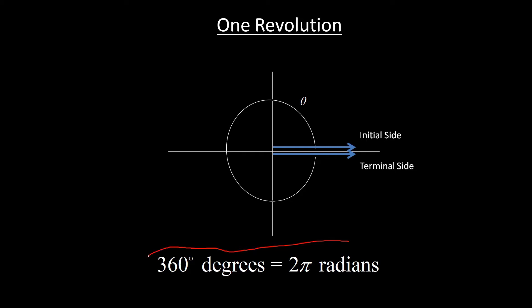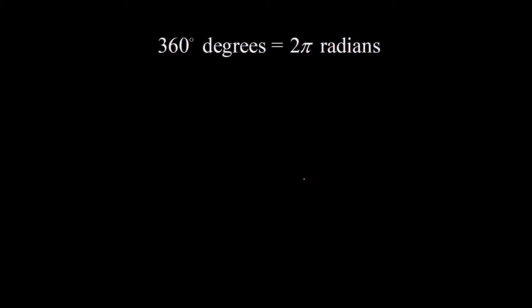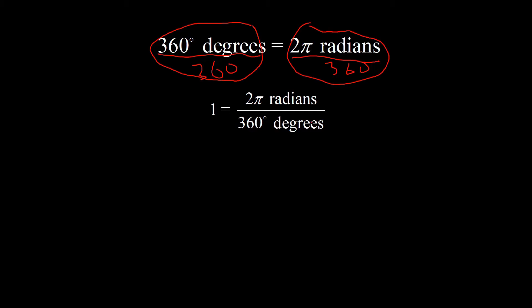And so we can take this statement and we can make a few relations from it. So imagine that we're going to divide both sides by 360 degrees. Now the words cancel just like numbers do. So on the left side, that's 1. Anything divided by itself is 1. While on the right side, we'll get 2π radians divided by 360 degrees. And this is a conversion factor on how we can convert between radians and degrees.